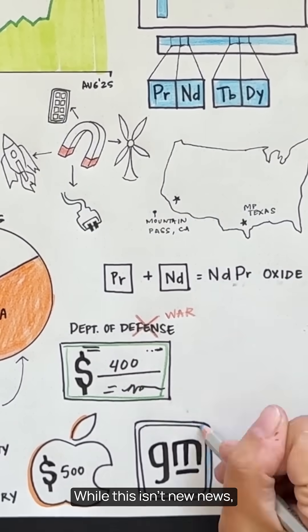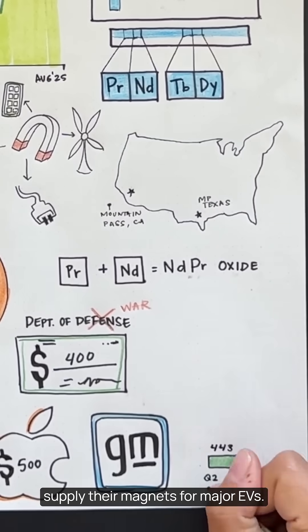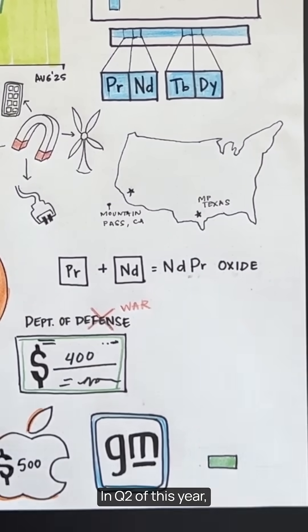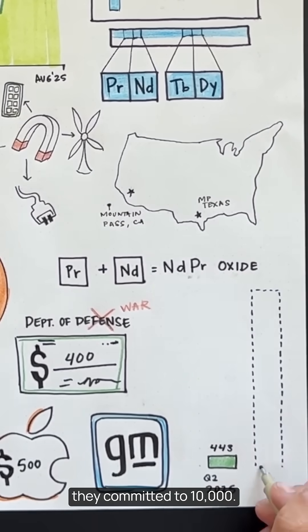And don't forget GM. While this isn't new news, MP has a binding long-term deal with General Motors to supply their magnets for major EVs. In Q2 of this year, MP Materials made 443 metric tons of NDPR oxide. In 2028, they committed to 10,000.